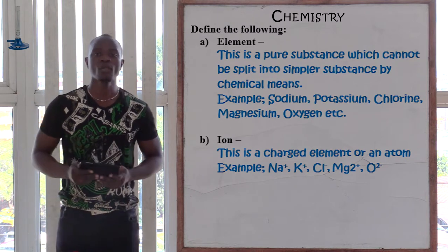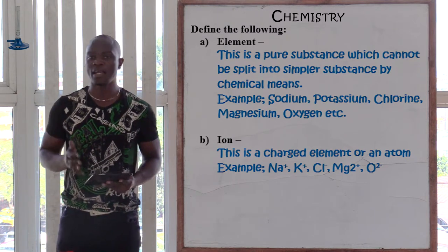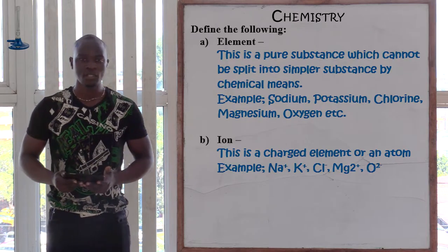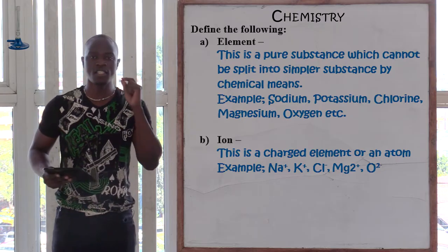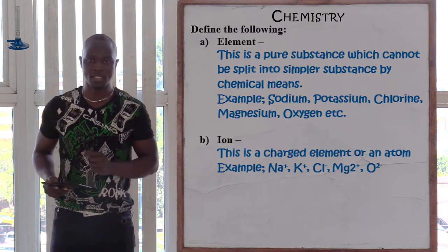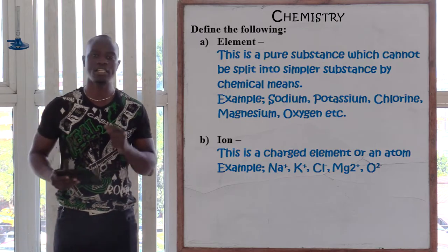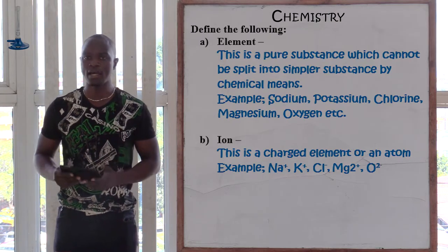The next one we have is ion. Define an ion. So what is an ion? An ion simply means this is a charged element. So if an element is charged, it automatically becomes an ion.